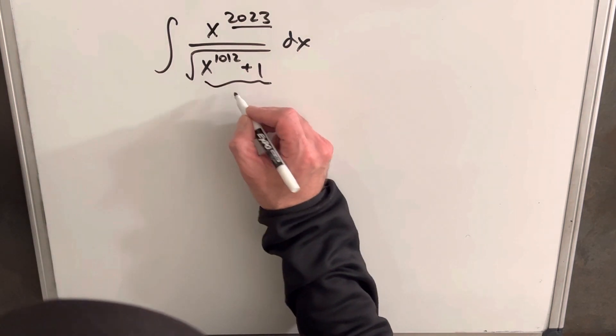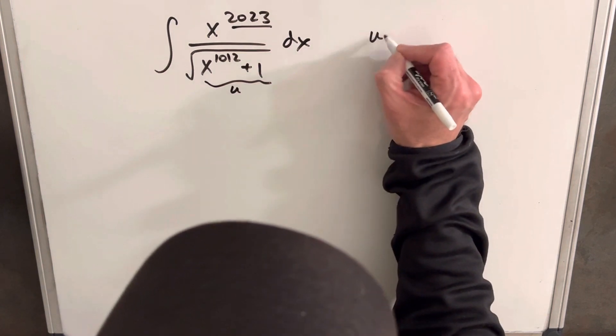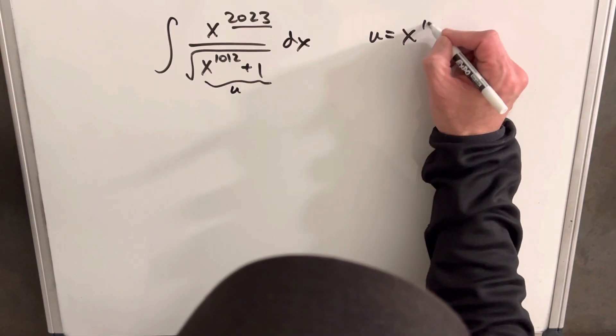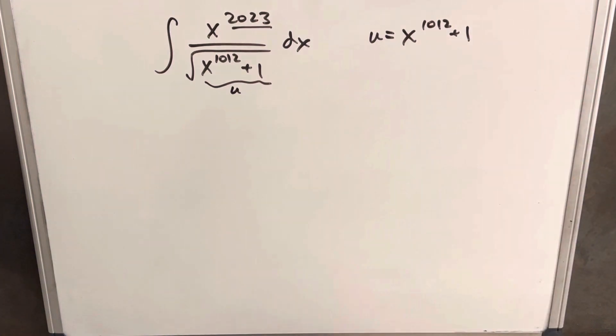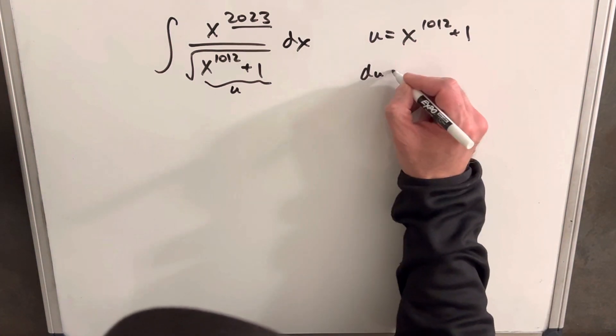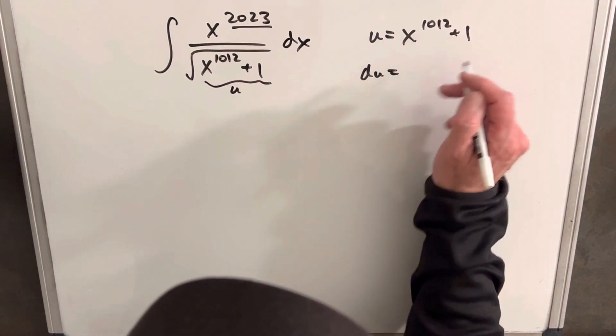I'm going to make this my u, so we'll say u equals x to the 1012 plus one. Then we're going to want to get our du value, which is going to be just taking the derivative here, is 1012 x^1011.